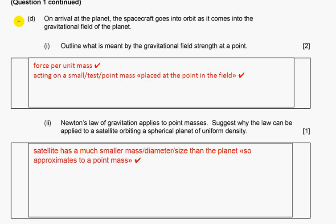On arrival at the planet, the spacecraft goes into orbit as it comes into the gravitational field of the planet. Outline what is meant by gravitational field strength at a point: force per unit mass acting on a small mass placed at the point in the field.